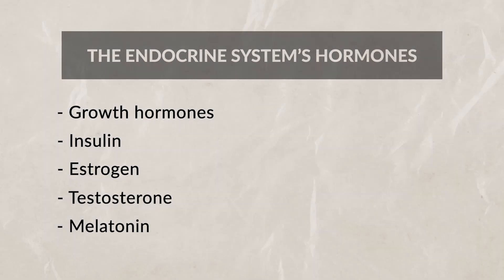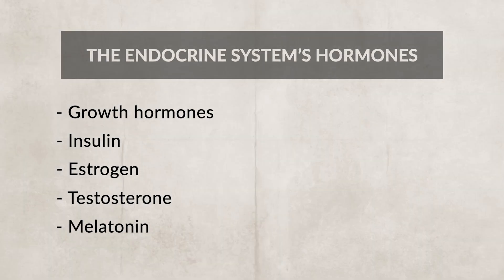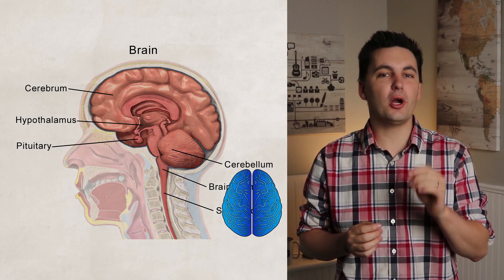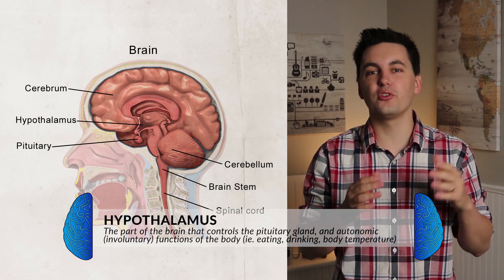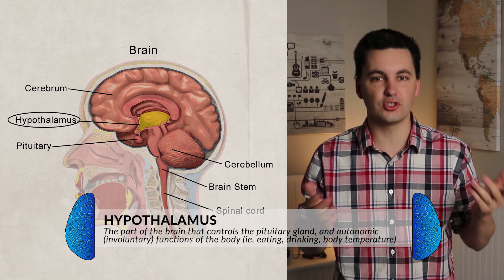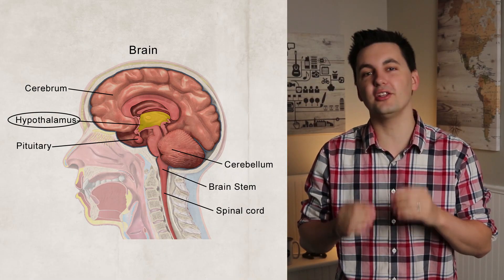These hormones allow you to maintain your blood pressure, help you fall asleep at night, allow you to grow, and also reproduce. Now let's get into the specific structures that make up the endocrine system. The best place to start is with the hypothalamus — a part of the brain that controls the pituitary gland. It also directs several autonomic functions of the body, such as your appetite and body temperature.